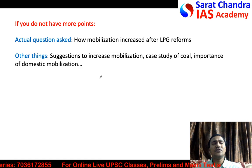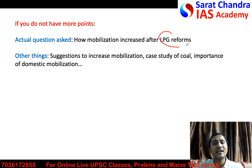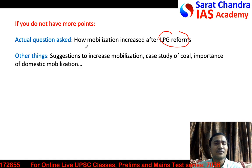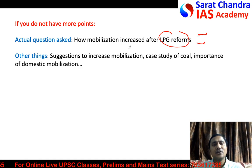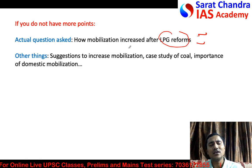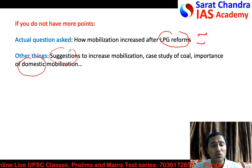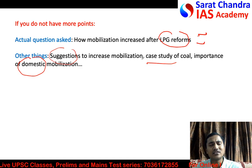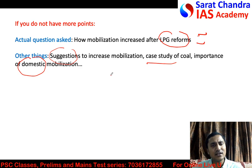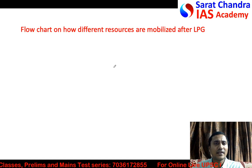If you do not know the exact answer — say you only know two points — write those two points, then fill the remaining page with related content: what is mobilization of resources, how it is useful for national development, what are domestic resources, suggestions for better mobilization, and the coal or iron ore case study with a few more lines. This way, you may not get very good marks, but you can get three to four marks instead of zero.